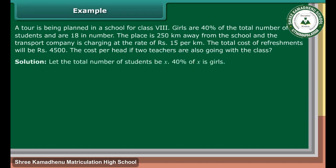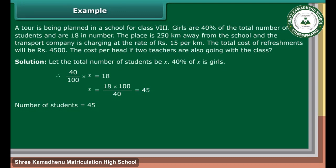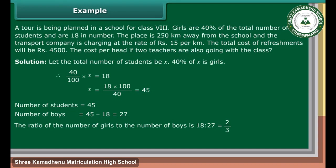Solution: Let the total number of students be X. 40% of X is girls. Therefore, 40 upon 100 into X is equal to 18. X is equal to 18 into 100 upon 40, which equals 45. Number of students is equal to 45. Number of boys is equal to 45 minus 18, which is 27. The ratio of the number of girls to the number of boys is 18 is to 27, which is equal to 2 is to 3.